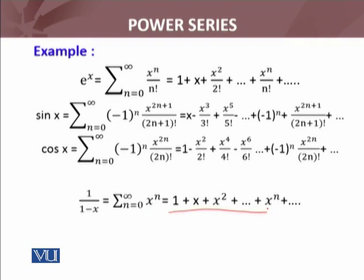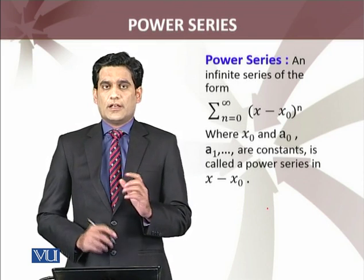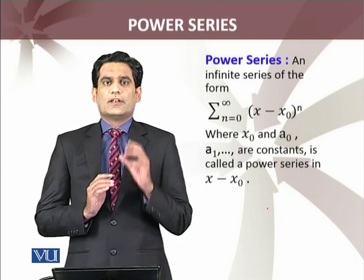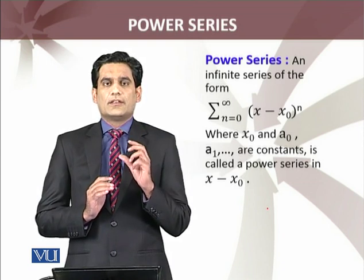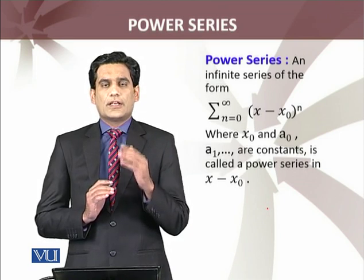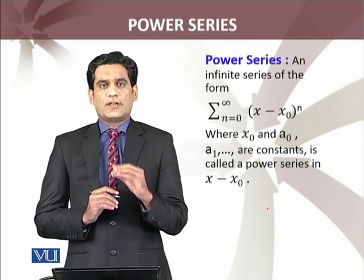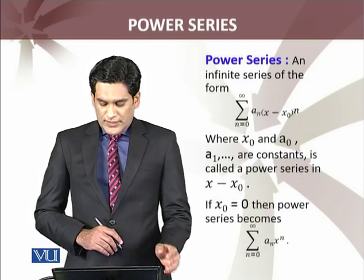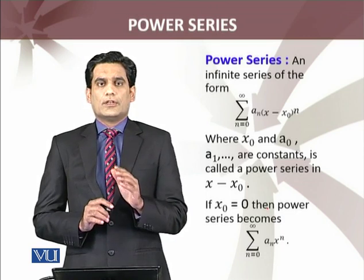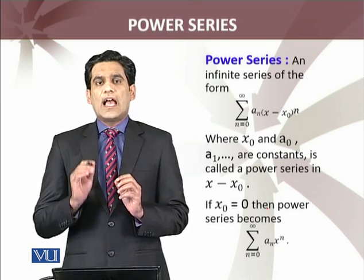An infinite series of the form summation n equals 0 to infinity of a_n times x minus x naught raised to power n is said to be the power series about x equals x naught. Now these a_n are constants. You can compare this with the McLaurin series and Taylor series we have discussed — you will see that those series are in fact a particular type of power series. If x naught equals 0, then we say this is the power series about x equals 0, and in that case the power series becomes summation n equals 0 to infinity of a_n times x raised to power n.